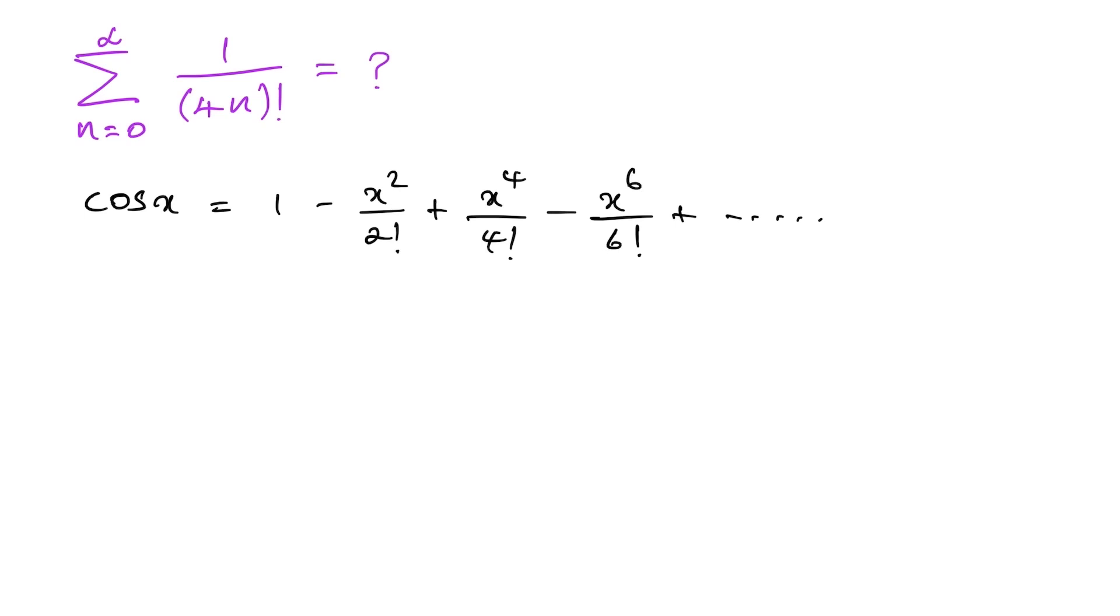Then let's recall the hyperbolic cosine of x. We know the Maclaurin series 1 plus x squared over 2 factorial plus x to the 4th power over 4 factorial plus x to the 6th power over 6 factorial plus so on.